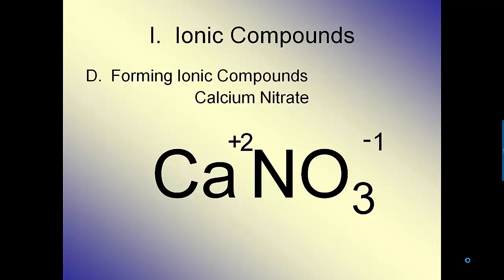The process is still the same. We're still going to crisscross our charges. I'm going to take the one of the nitrate and bring it down next to the calcium, and the two of the calcium and bring it down next to the nitrate. But the problem is, if I just get rid of my charges like I did previously, the nitrate looks like NO32, which is not right, because I don't have 32 oxygens. I have two NO3s. So I'm going to get rid of my charges and put the NO3 in parentheses.